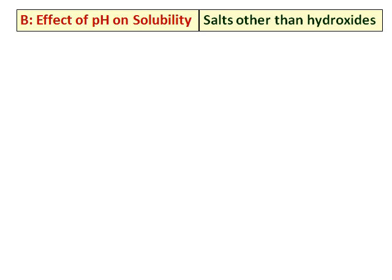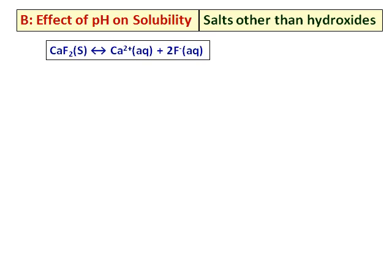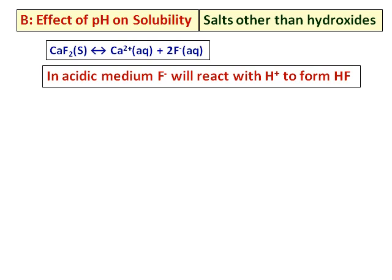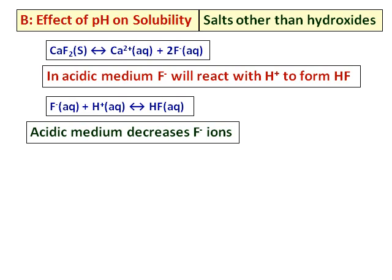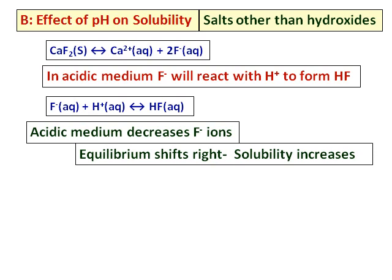Now let's do the effect of pH on a salt other than a hydroxide. Consider calcium fluoride, CaF₂, which ionizes into Ca²⁺ and 2F⁻. Fluoride, F⁻, is the conjugate base of the weak acid HF and can react with hydrogen ions. In acidic medium, fluoride reacts with H⁺ to form HF, removing fluoride from the system. Removing a product shifts the equilibrium towards the products, meaning the solid dissolves and solubility increases. All salts with anions from weak acids will have increased solubility in acidic medium.